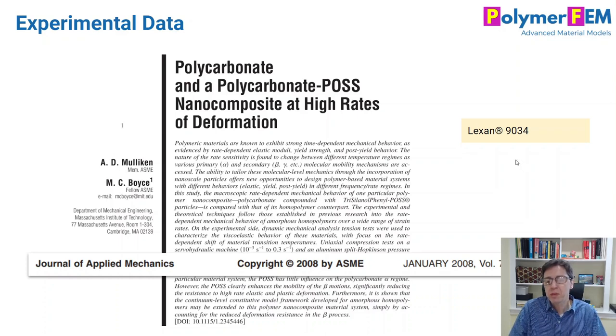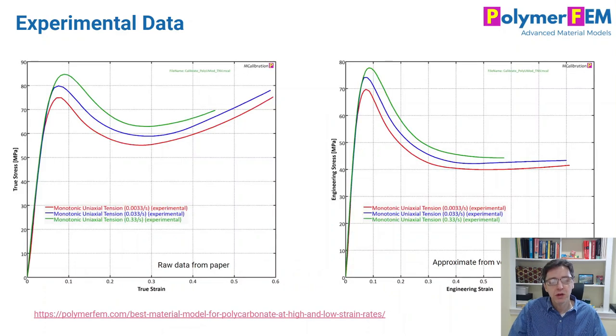This is now experimental data from Lexan 1934 from a paper. It's based on experimental data from Mulliken and Boyce from 2008 and they did experimental testing of polycarbonate at very high rates but also low rates. So today I will focus on the low rate experimental data from the Mulliken-Boyce paper.